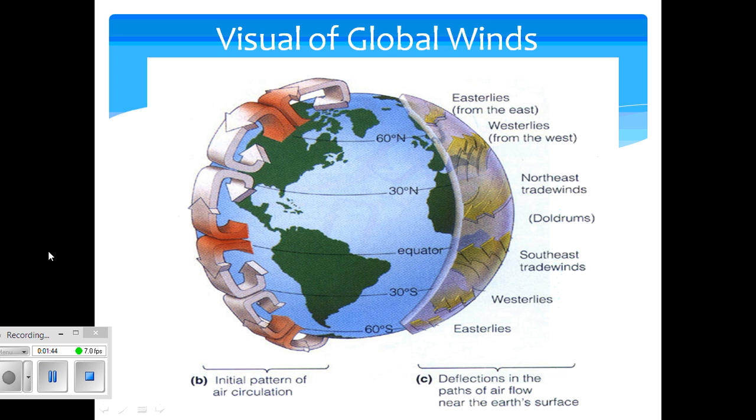Here is just a general visual of global winds. When thinking of the descriptions of these global winds, the definition of many of their wording comes from the direction that they begin in. In this case, if you think of the easterlies, they begin from the east. When you think of the westerlies, they begin from the west.